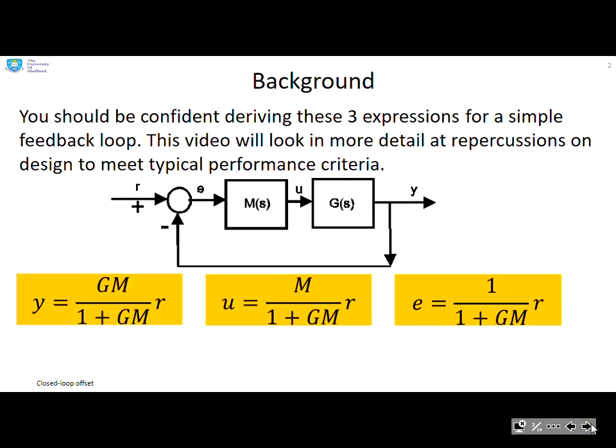As some background, we're going to assume that you're confident in deriving closed loop transfer functions and you can see those are given there. And we're going to look in more detail at repercussions of those on typical performance criteria.